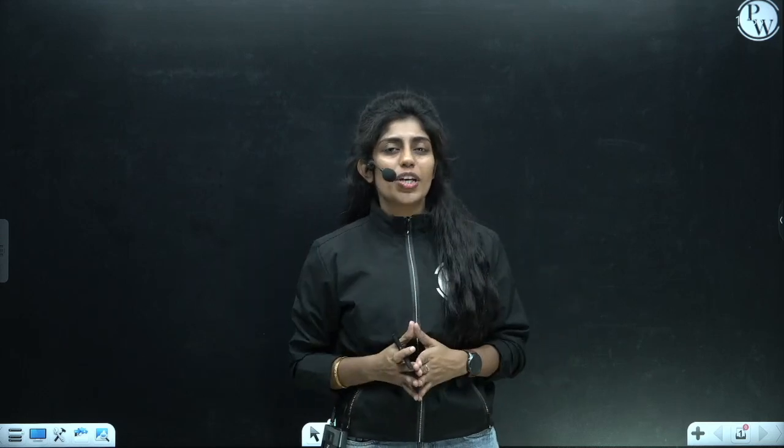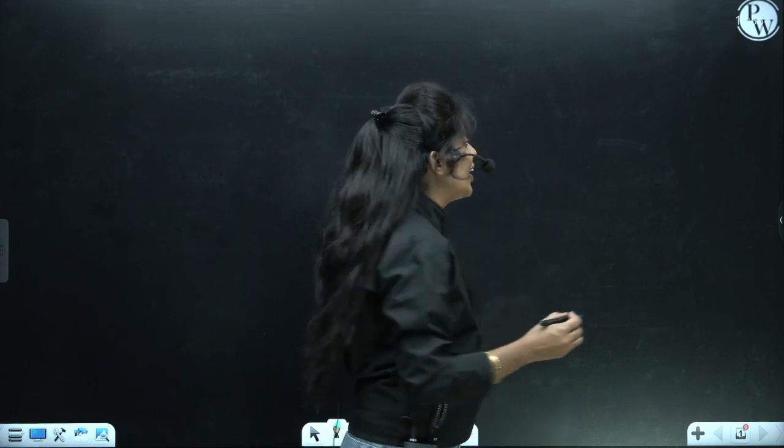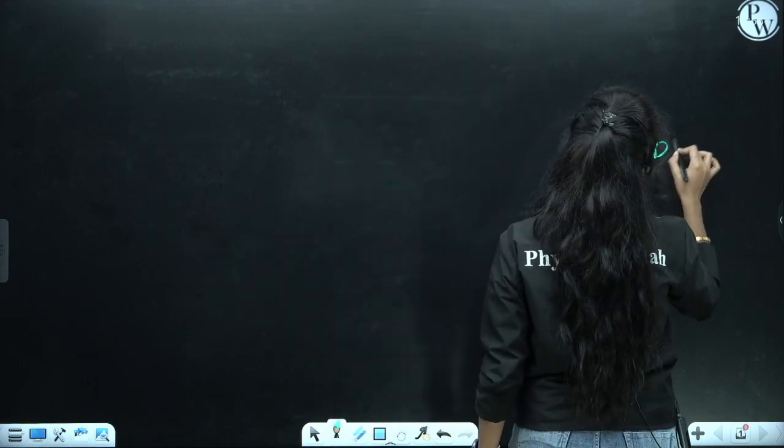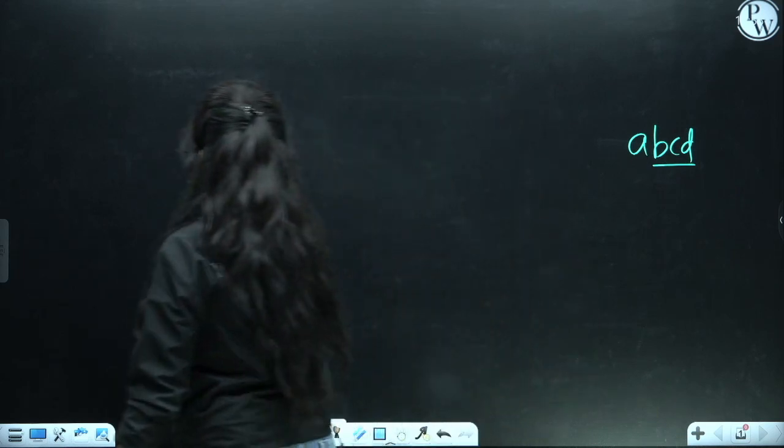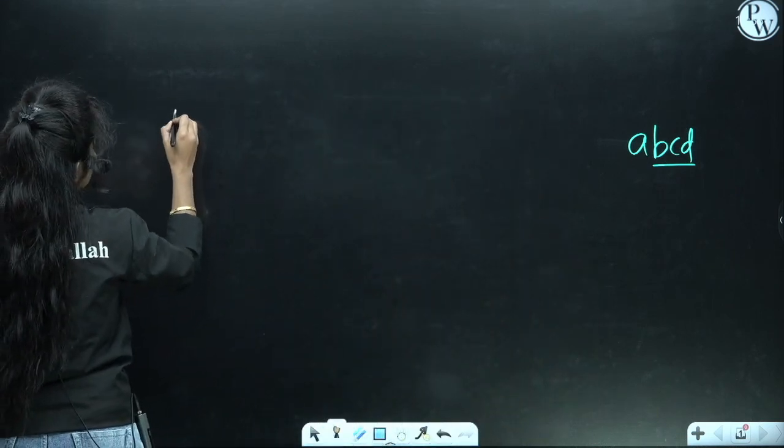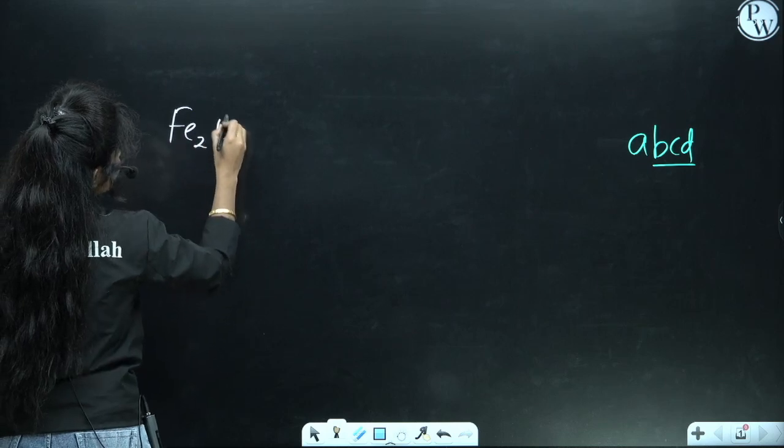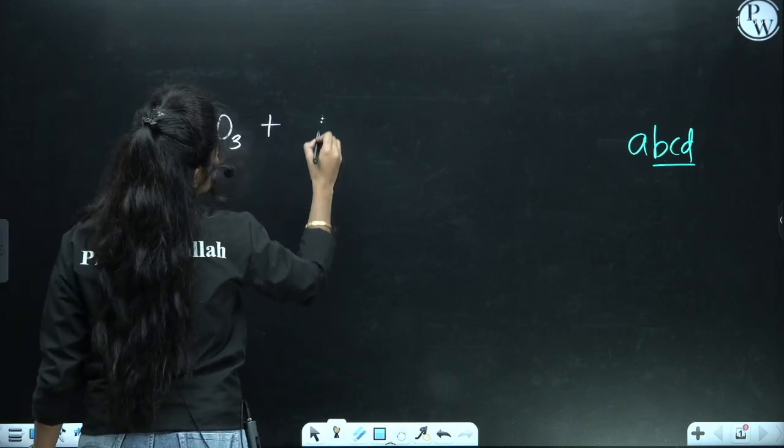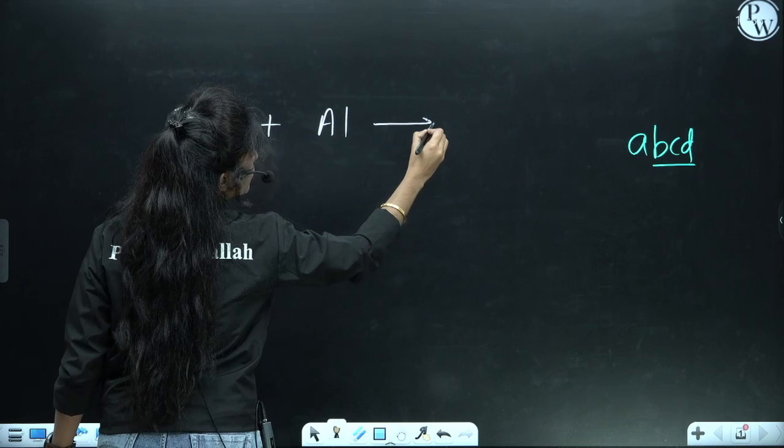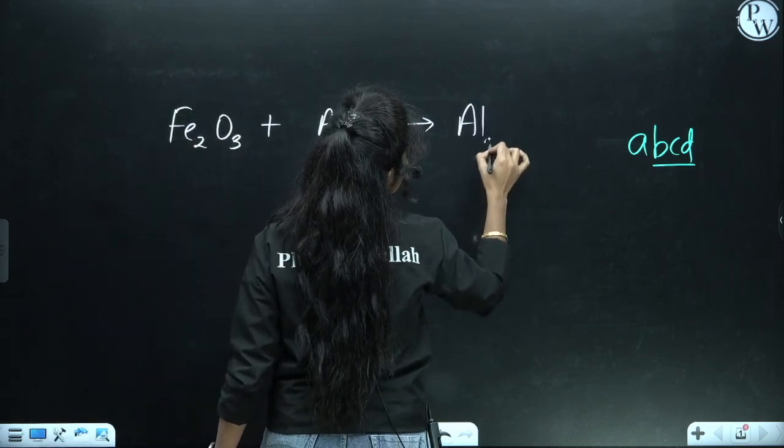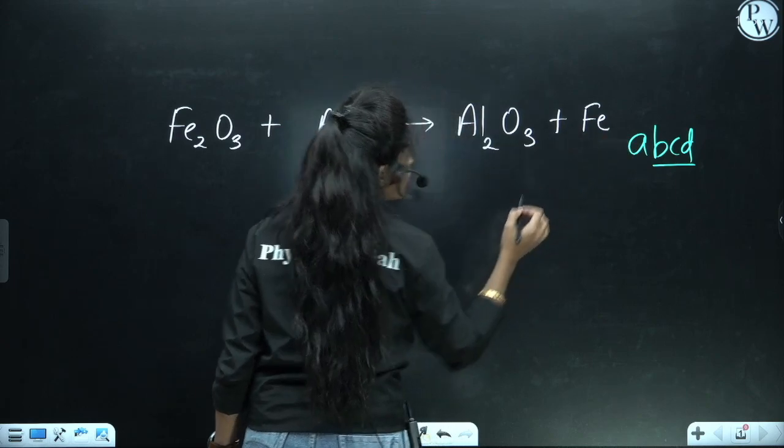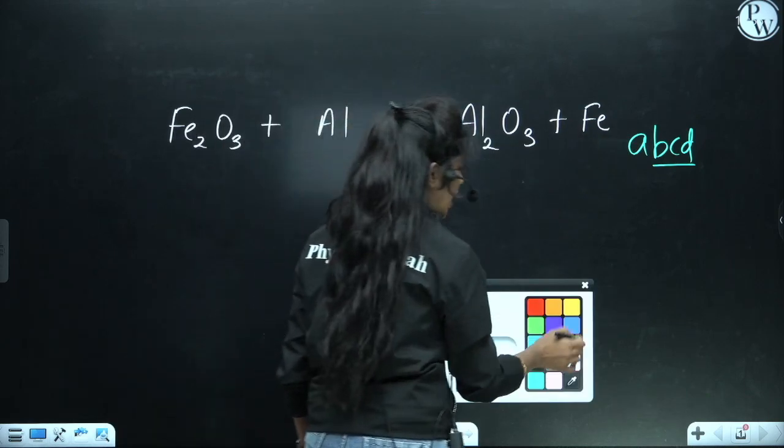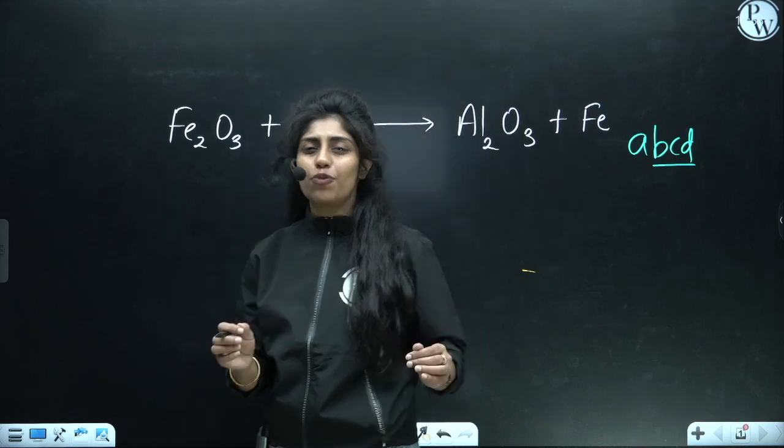We can apply the ABCD method. Now what is this method? Suppose we have one reaction, this is your reaction: Fe₂O₃ + Al → Al₂O₃ + Fe. Can you tell me what reaction is this and where are we using this reaction? It's one of the most famous reactions. Do let me know in the comments.